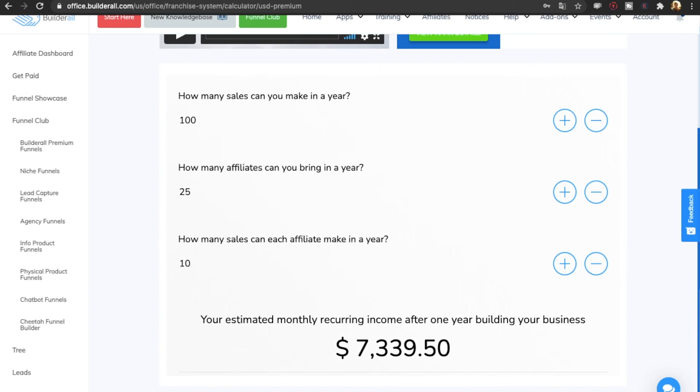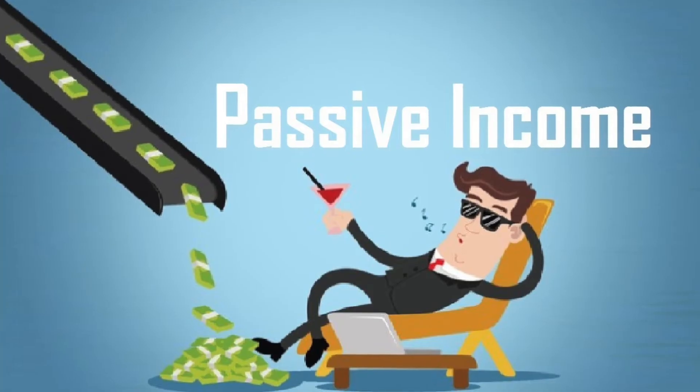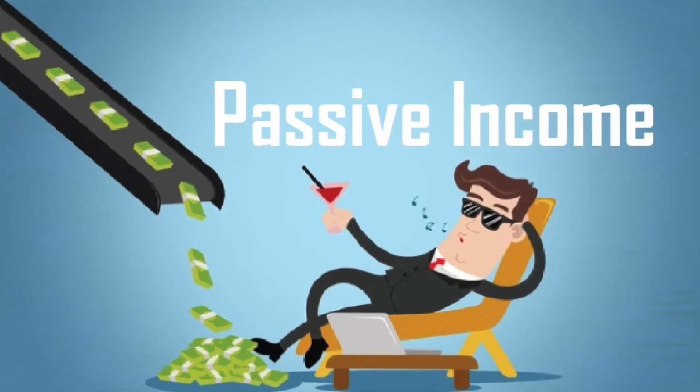That means you could go on the beach for two months and you would likely keep getting $7,000 into your bank account every single month. Maybe it could be more if some of your affiliates get more sales, or less if some of your customers cancel their BuilderWall plan.